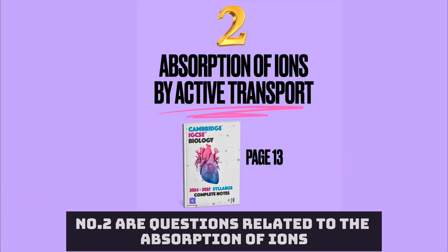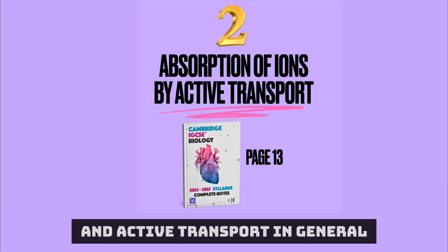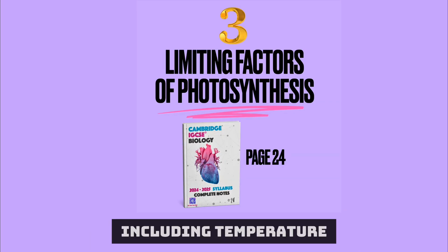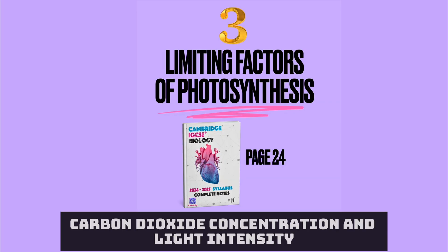Number two are questions related to the absorption of iron and active transport in general. Number three are the three limiting factors of photosynthesis, including temperature, carbon dioxide concentration, and light intensity.